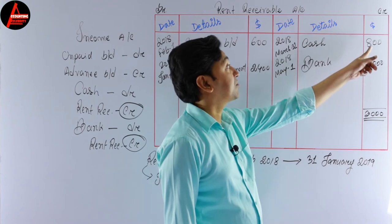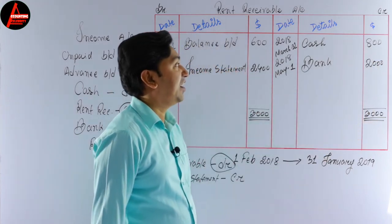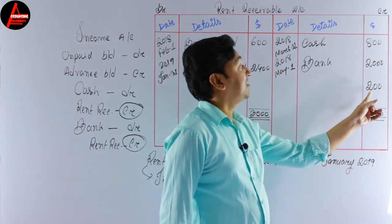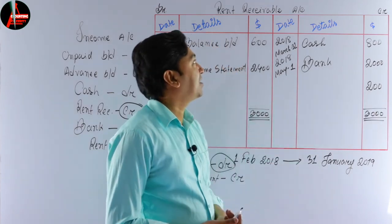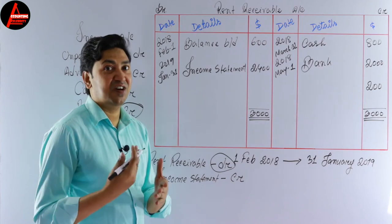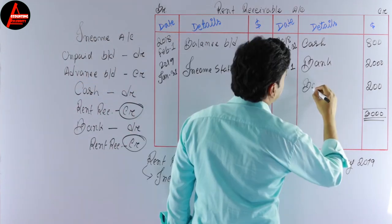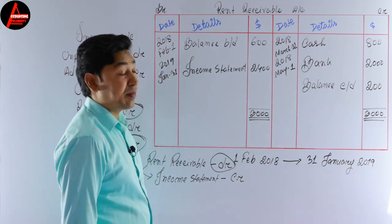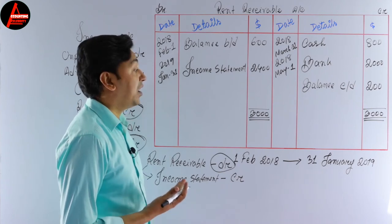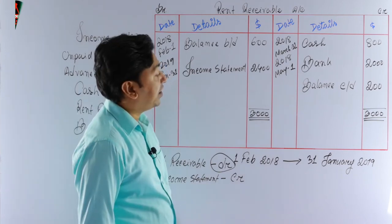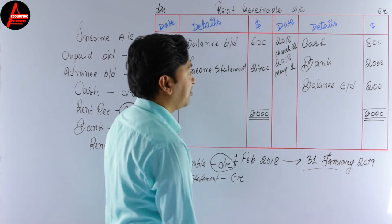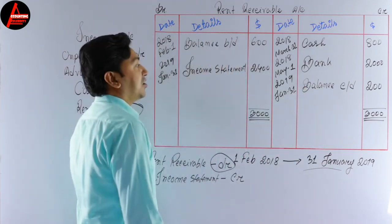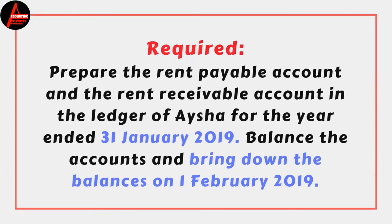Now we subtract the credit entries from the total $3,000. We get $200. This is the closing balance of the rent receivable account — balance c/d. The date for balance c/d is the last day of the accounting period, which is 31st January 2019. So we write: 2019, January 31st — balance c/d — $200.